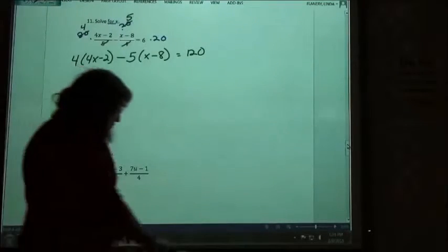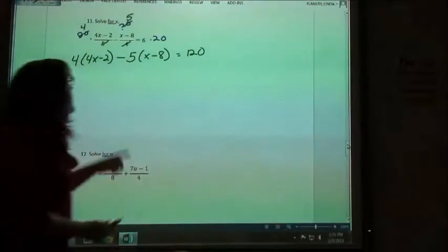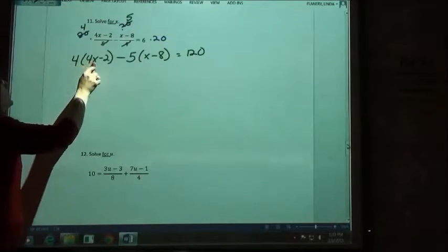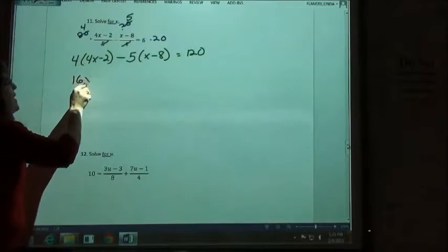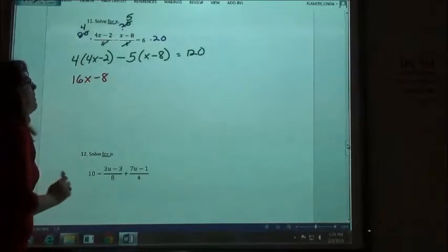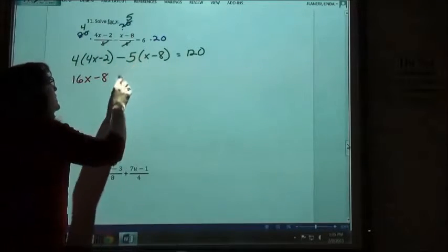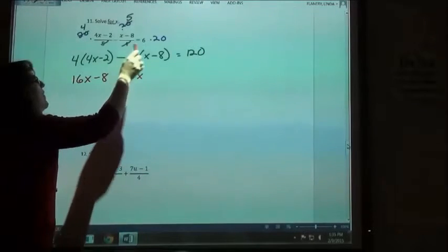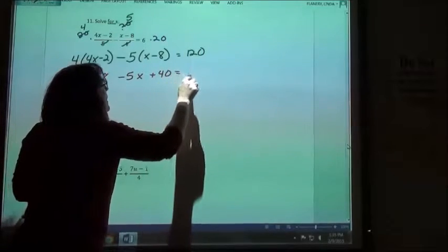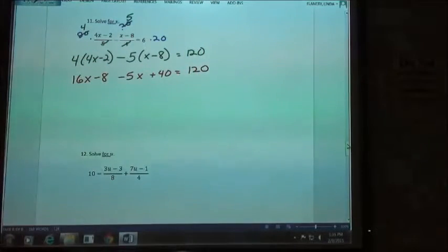So on this one, we've got parentheses, two sets of parentheses that we have to get rid of. 4 times 4x would be 16x. 4 times minus 2 is minus 8. Negative 5 times x is negative 5x. Negative 5 times a negative 8 is a positive 40, to equal my 120.